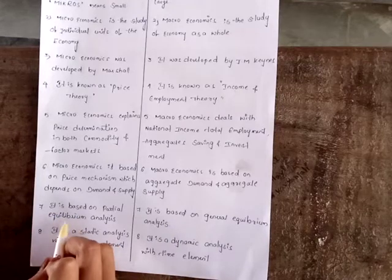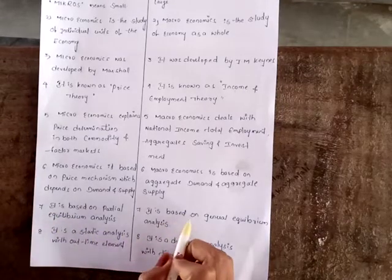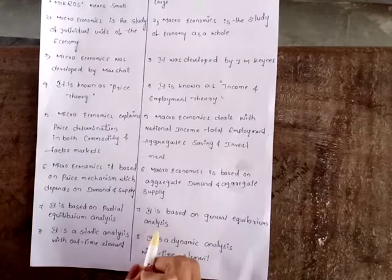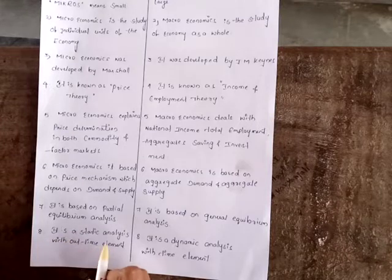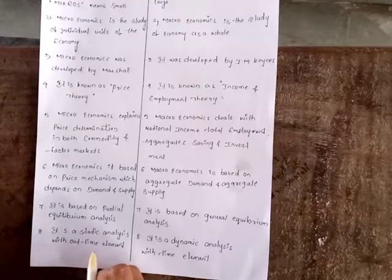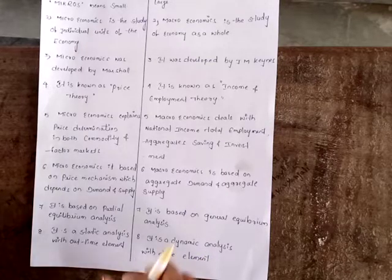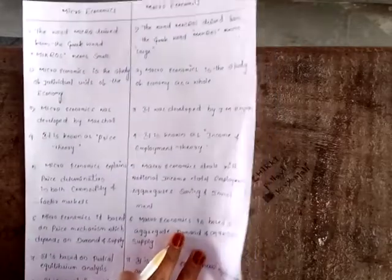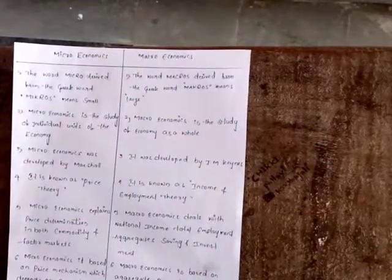Microeconomics is based on partial equilibrium analysis; macroeconomics is based on general equilibrium analysis. Microeconomics is a static analysis without a time element; macroeconomics is a dynamic analysis with a time element. That is the difference between microeconomics and macroeconomics. Thanks for watching.